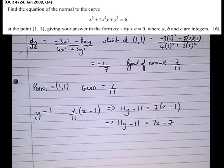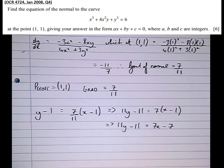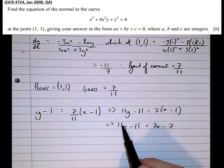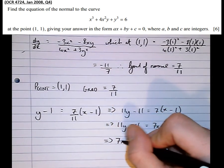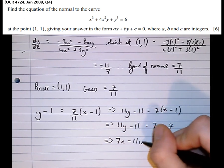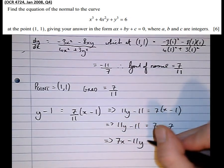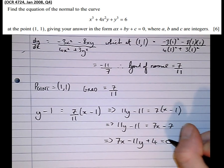Almost there. Then given it in the correct form, it wants it in the form ax + by + c = 0, with a, b, and c being integers. So let's take the 11y over to the other side. Which means that 7x, take 11y, let's add this 11 over to the other side as well, plus 4, equals 0.